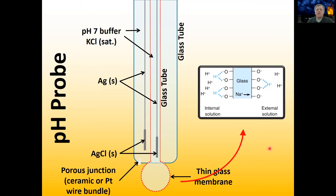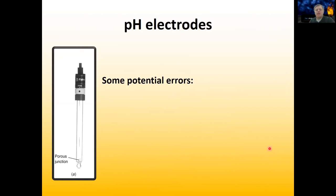There are a lot of potential errors that can creep in when making measurements with pH electrodes. The first is that the current you're relating to pH has to be calibrated using a set of standards. If there's any problem with your standards — say you're using standards at pH 4, 7, and 10, but the actual values are 4.2, 6.8, and 10.2 — then your calibration is going to be thrown off. Calibration errors are very common.